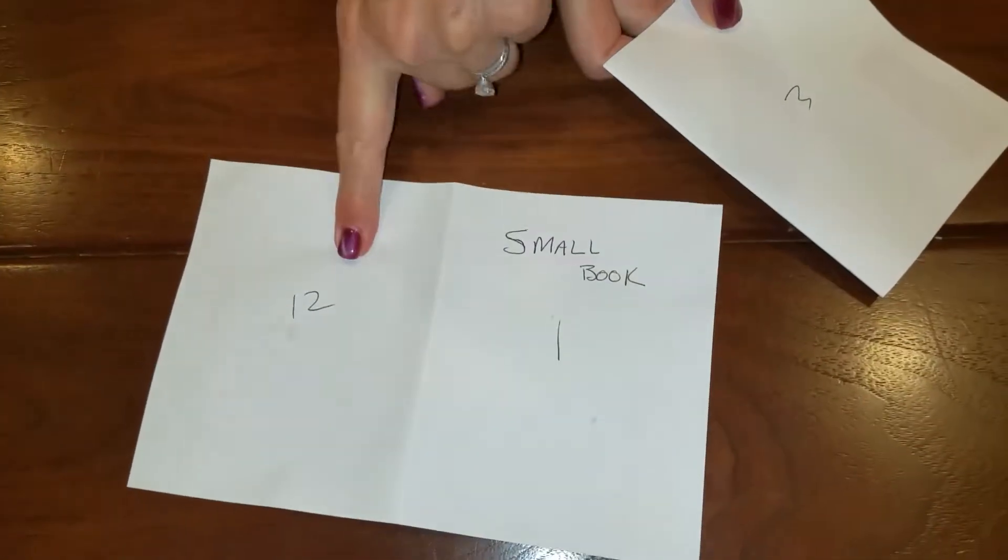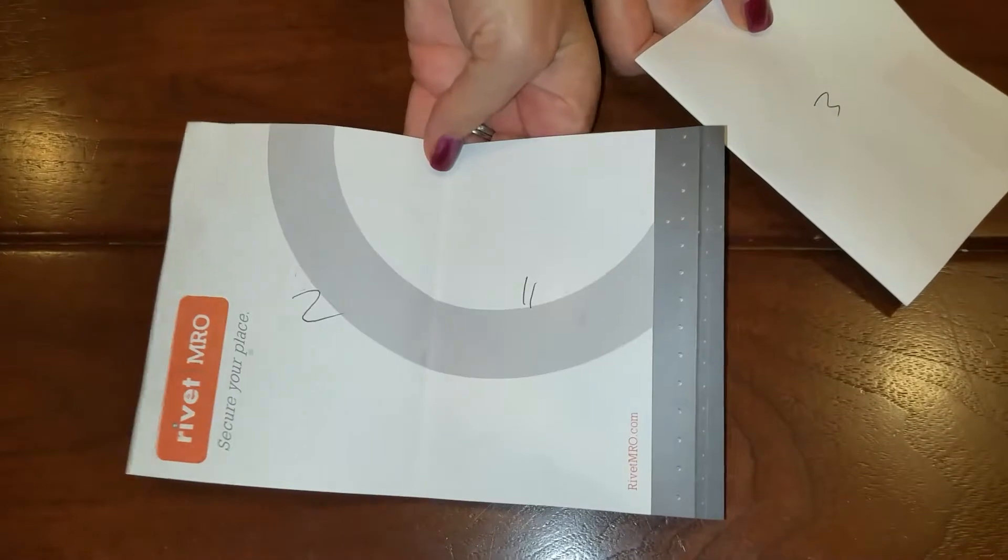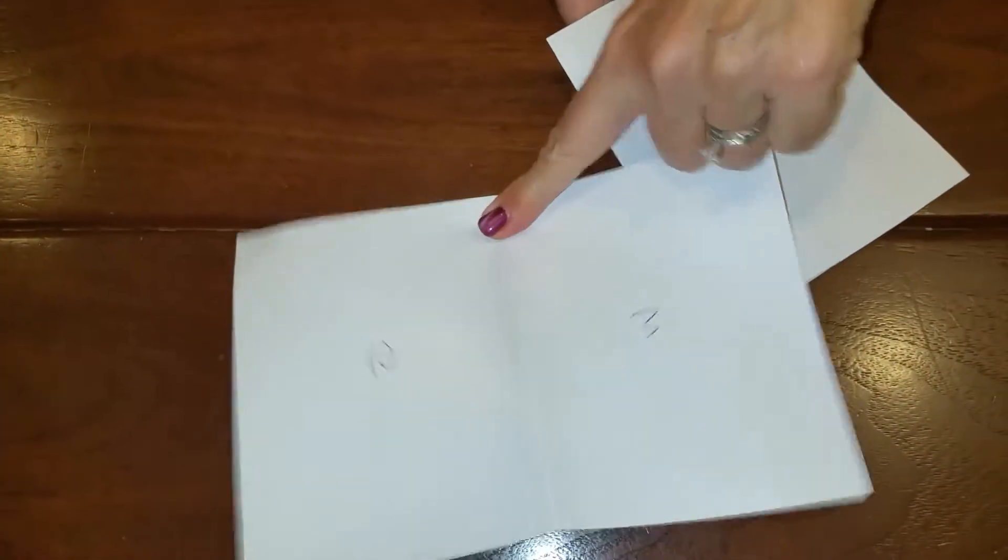The first spread will have pages 1 and 12, then 2 and 11. The next spread will have pages 3 and 10,